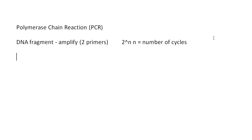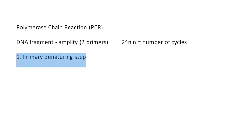Once you place your PCR reactions in a thermocycler, the first step is a primary denaturing step. This is typically around 95°C for 30 seconds, though it varies by experiment, DNA template, and personal preference. This step completely breaks apart your template DNA into two separate single-stranded components, because your primers need access to the complementary sequences. The only way to do that is to apply heat.